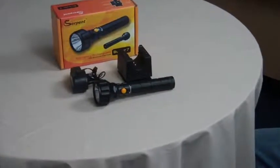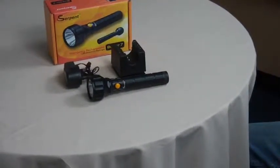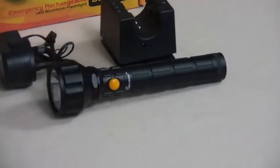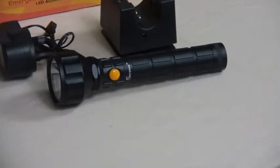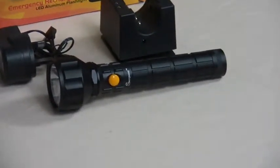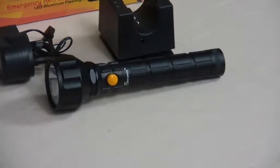This quality torch has an LED which equates to 300 lumen. This lets you have visibility of 500 meters on a dark night. The LED is designed to last for about 100,000 hours.